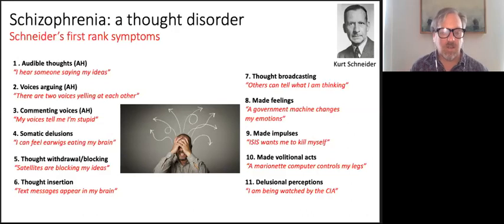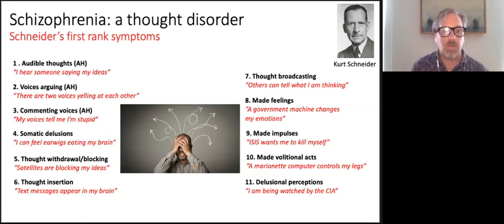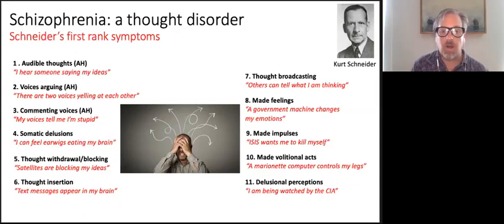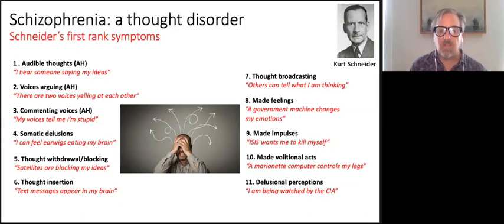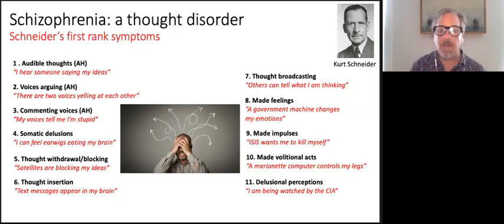Somatic delusions — such as the gentleman I met who thought earwigs were eating through his brain. Thought withdrawal and blocking we've discussed. Thought insertion is the opposite: a thought that is not yours is placed into your brain. Thought broadcasting is where the person has a delusion that their thoughts are being picked up by other people. Made feelings refer to emotions the person experiences as coming from outside themselves. Made impulses involve feeling controlled by an external machine. And then there are delusional perceptions — paranoia often falls in that category.